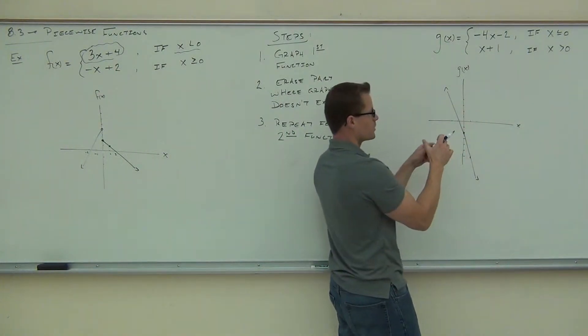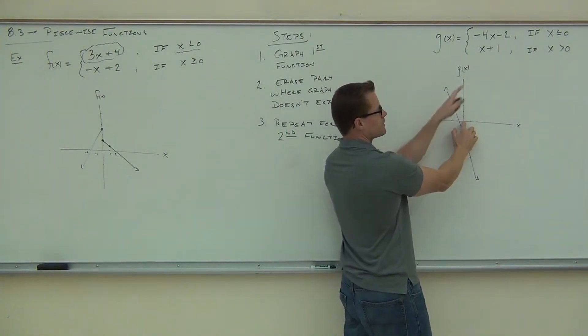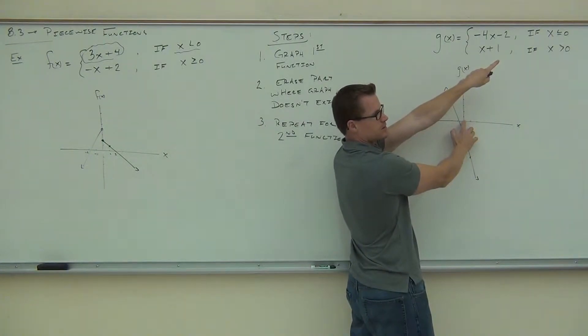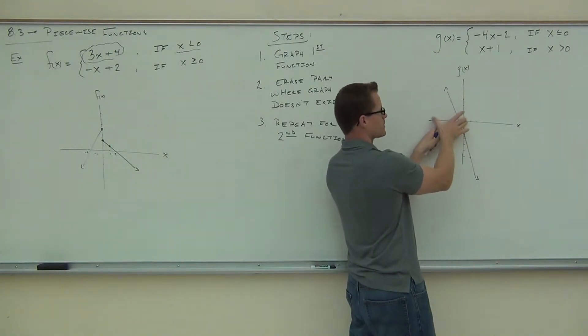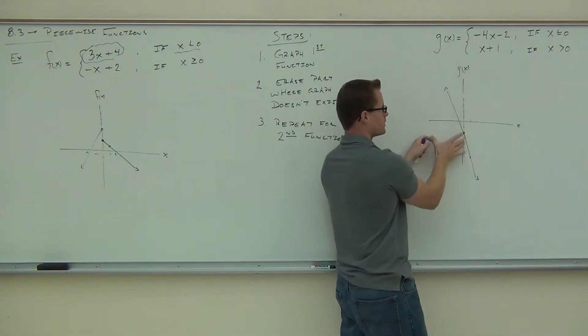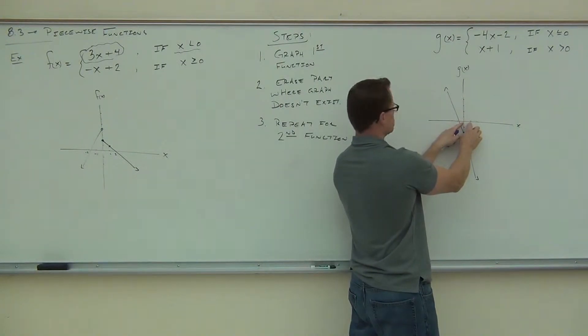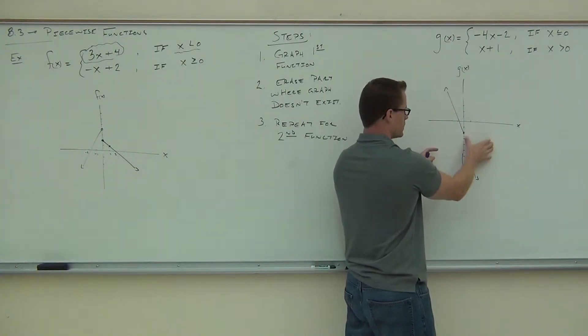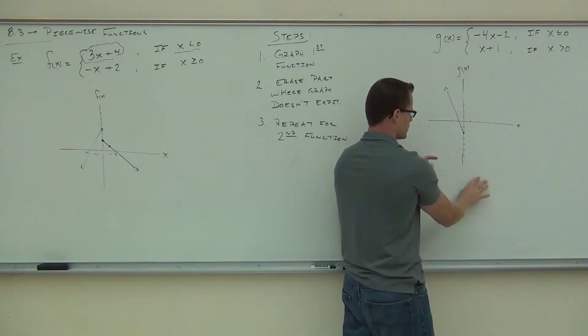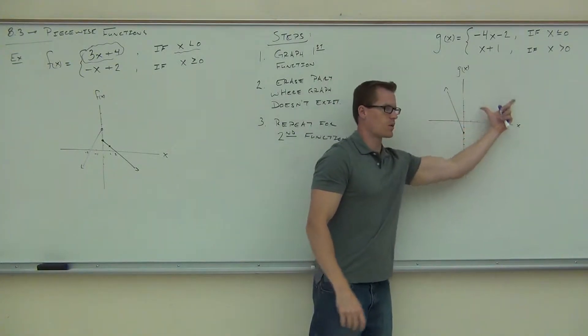So again, we go to our 0. We follow our directions. We want x is less than or equal to 0. This is less than 0. This is less than 0. This is. That means I'm keeping this vertical segment. This is not less than 0. This is not less than 0. I'm erasing this vertical segment. So nothing on this side of the graph should be there right now.